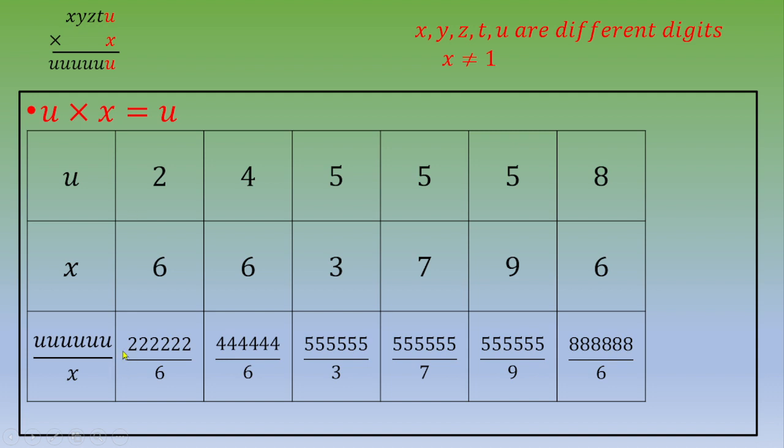So for example, the first value is 222,222 over 6. The second one is 444,444 over 6. And so on and so forth. So then you do the math and you calculate the results for every fraction.